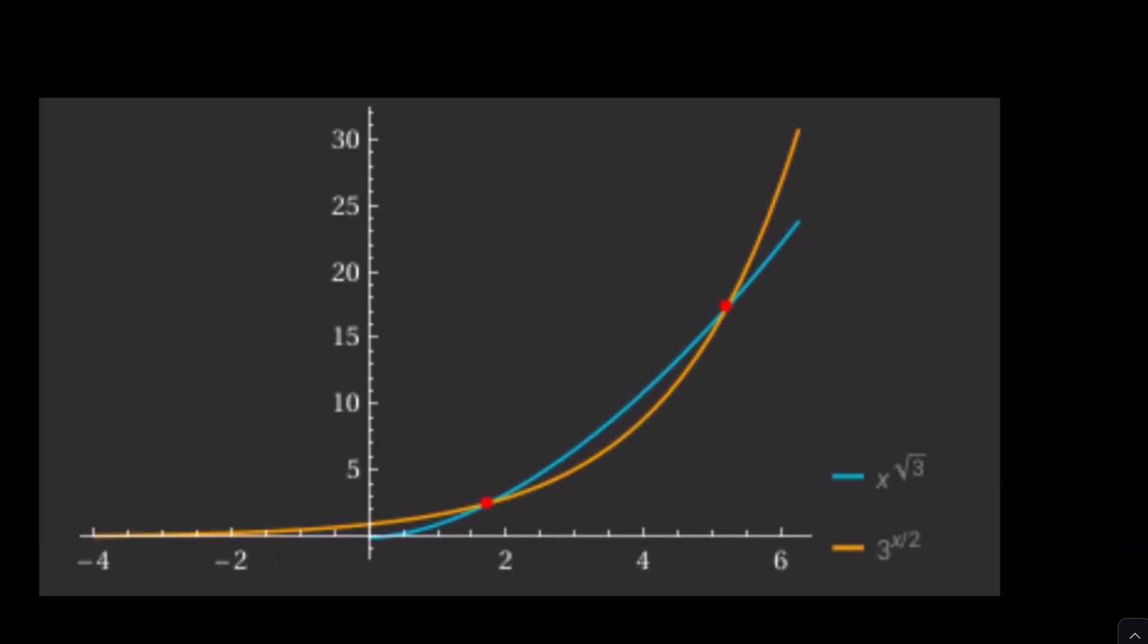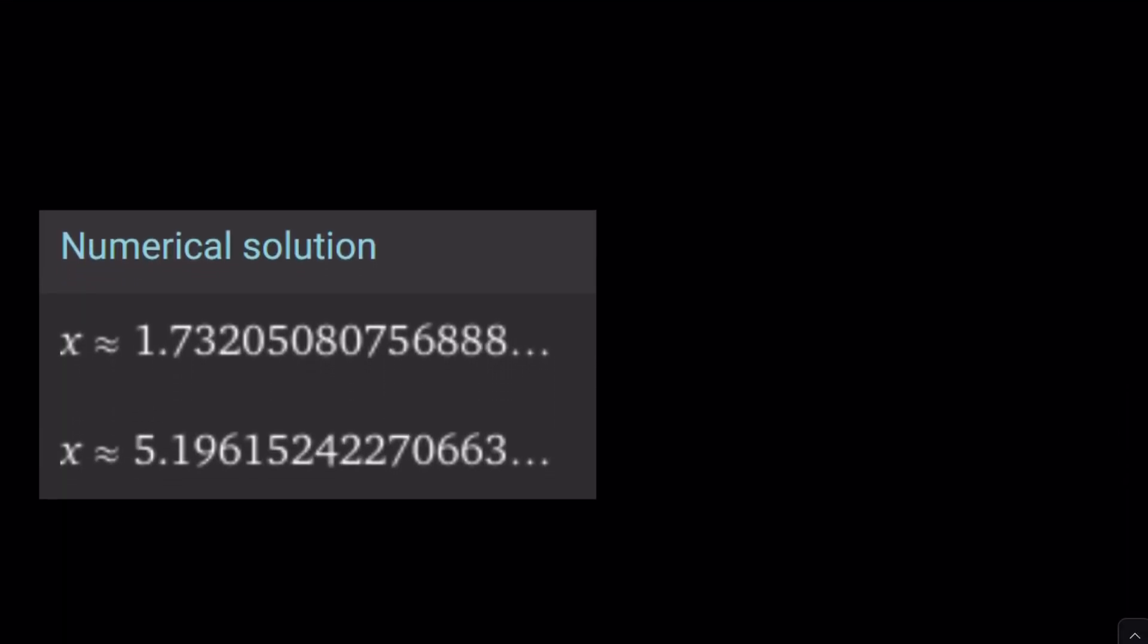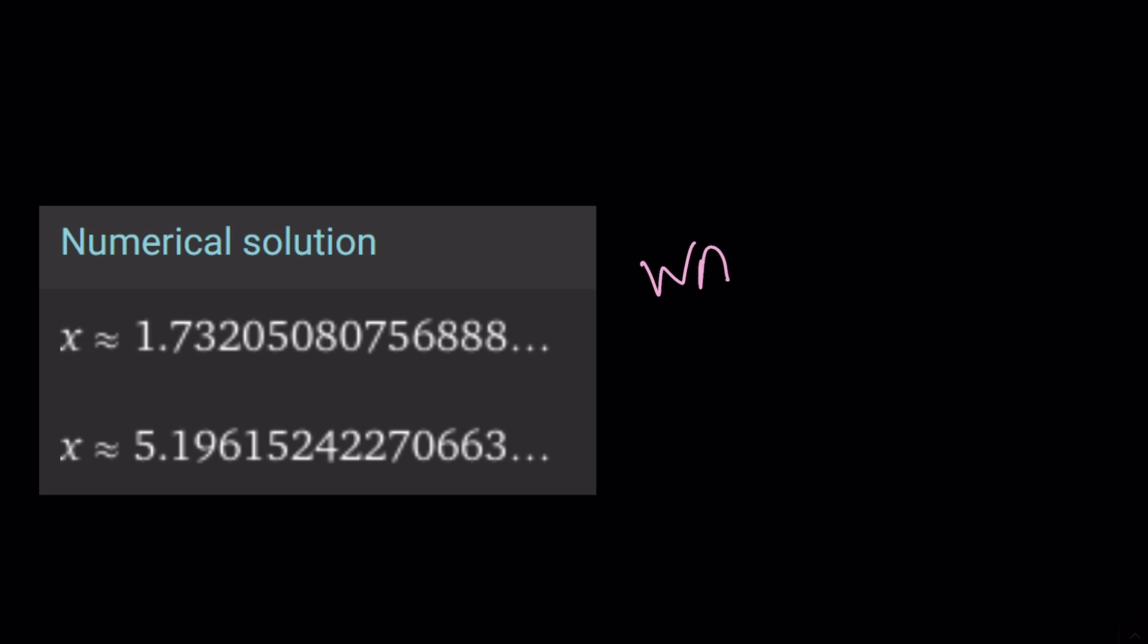Let me show you a couple of things before we finish. First, the graph of these two functions. Notice that they intersect at two points, at √3 and 3√3. That can be explained by, first, numerical solution from Wolfram Alpha. Thank you very much for these. This is √3. This is 3√3. They're both solutions. You can check it out.